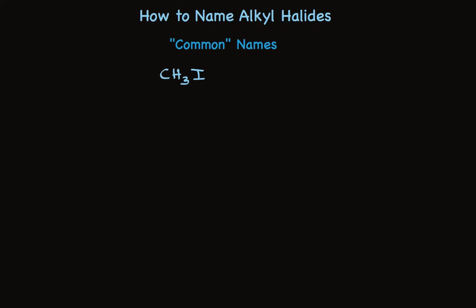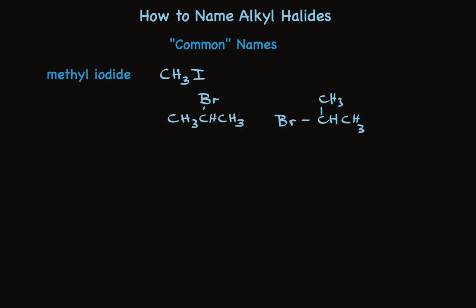Using common names, we simply say the name of the alkyl group that the halide is attached to, followed by the word iodide as a separate word. This is methyl iodide. Here I've shown isopropyl as the group — I've drawn it two ways because it can be confusing and I wanted you to see both — and we call this compound isopropyl bromide. It's no different for rings. This is a cyclopentyl group that has fluorine attached; we call it cyclopentyl fluoride.